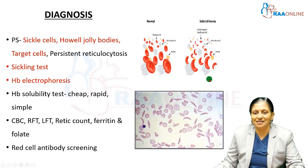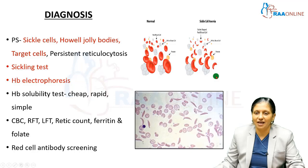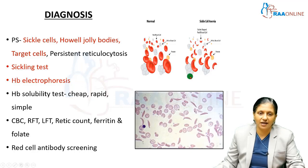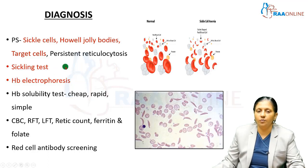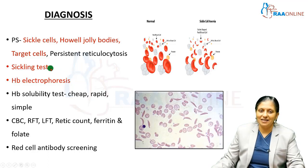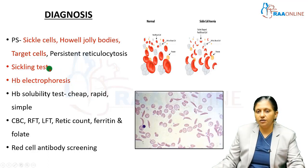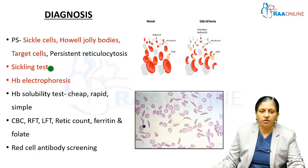In the presence of hemoglobin SS, sickling can be induced and the peripheral smear examined where the suspicion index is very high — for example, in patients coming from Odisha — to confirm whether there is sickling in the presence of sodium metabisulfite.